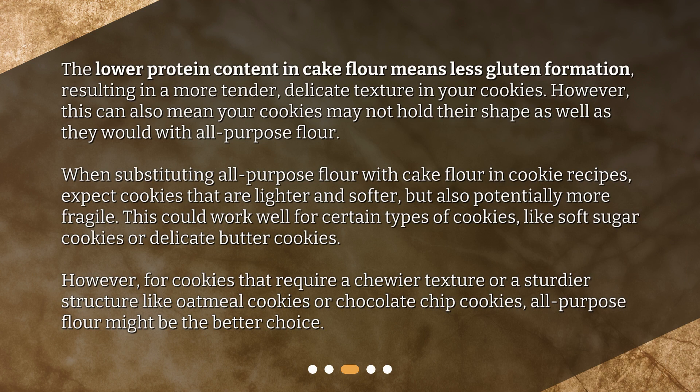The lower protein content in cake flour means less gluten formation, resulting in a more tender, delicate texture in your cookies. However, this can also mean your cookies may not hold their shape as well as they would with all-purpose flour. When substituting all-purpose flour with cake flour in cookie recipes, expect cookies that are lighter and softer, but also potentially more fragile. This could work well for certain types of cookies, like soft sugar cookies or delicate butter cookies.